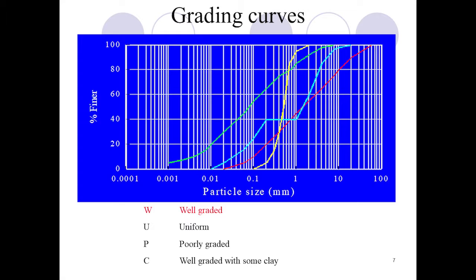Poorly graded soils include gap-graded soils where some particle sizes are missing. Well-graded with some clay means particles less than 0.002 mm are present, shown in the green curve.